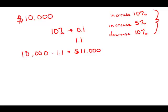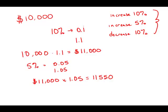Now, an increase of 5%. 5% as a decimal is 0.05. Add 1, and we get the multiplier, 1.05. 11,000 times 1.05, and this is 11,550. That's how much she had in her account during the second year.